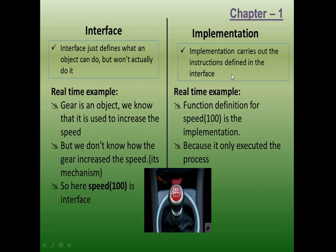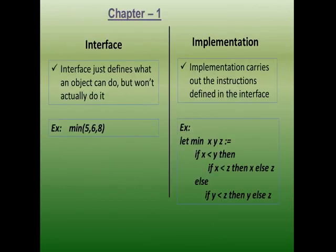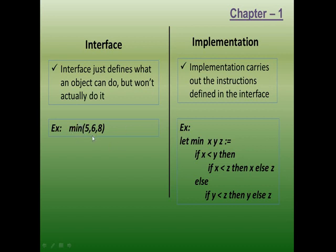Implementation is the function definition which actually executes the process. For example, seeing 'min(5, 6, 8)', I can understand it is a function with three values and it is going to calculate the minimum among three values. I know this, but I don't know the logic of how this function minimum does the process. That is the interface. The real definition which actually executes is the implementation. Simply put: function prototype is the interface, function definition is the implementation.